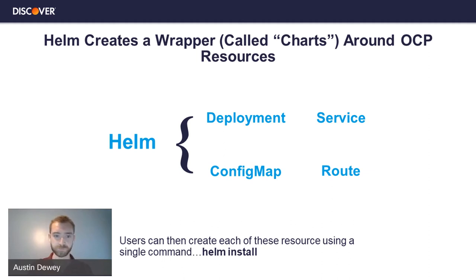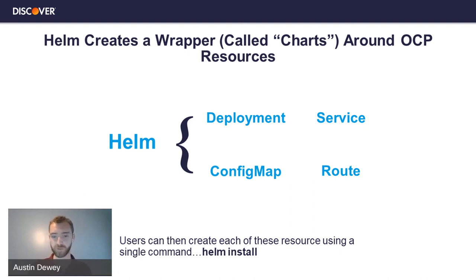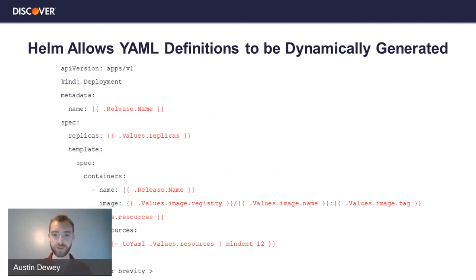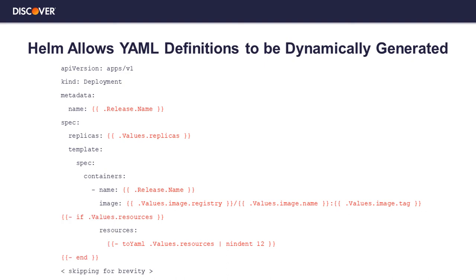Helm 101: Helm creates a wrapper called charts around OCP resources. What you can see here is a Helm chart wrapping around a deployment, a service, a config map, and a route — four common resources you might need to deploy an OpenShift application. Instead of having to go in and create each of these resources by hand, a user can just run one command — 'helm install' — and it will go and create each of those resources for them. A Helm chart is written by a subject matter expert, a member of your operations or DevOps team.